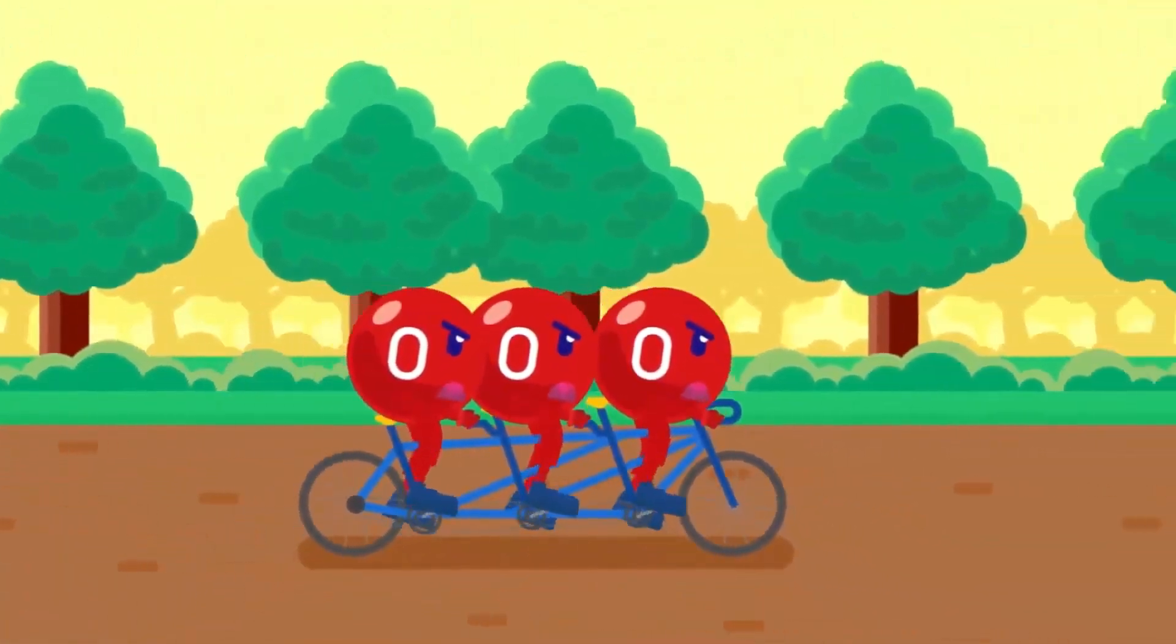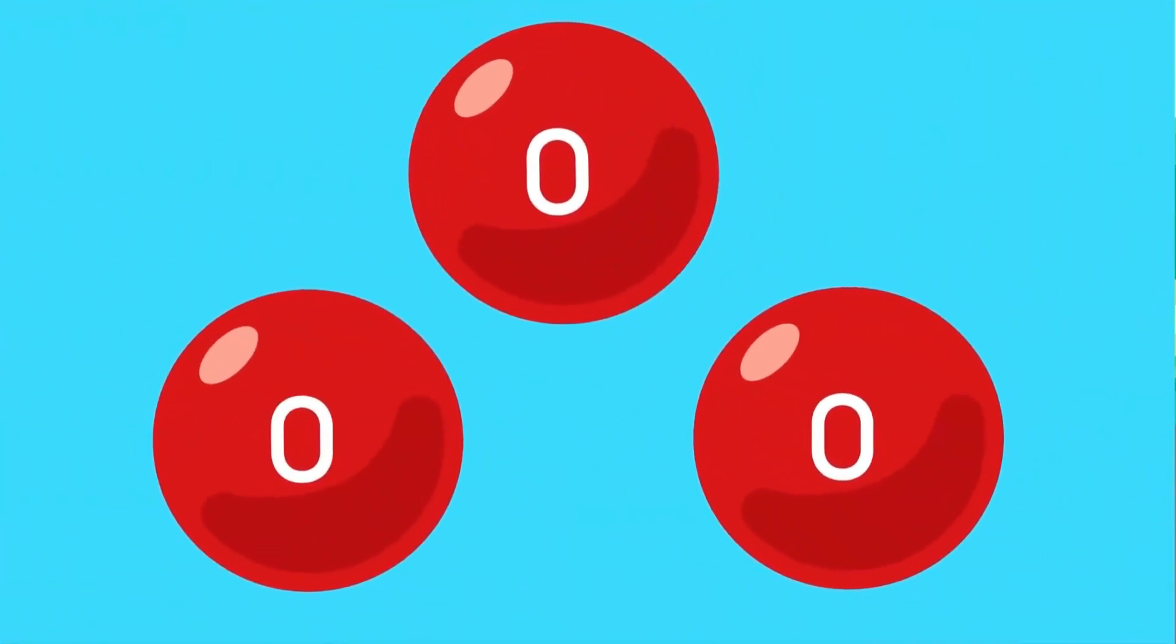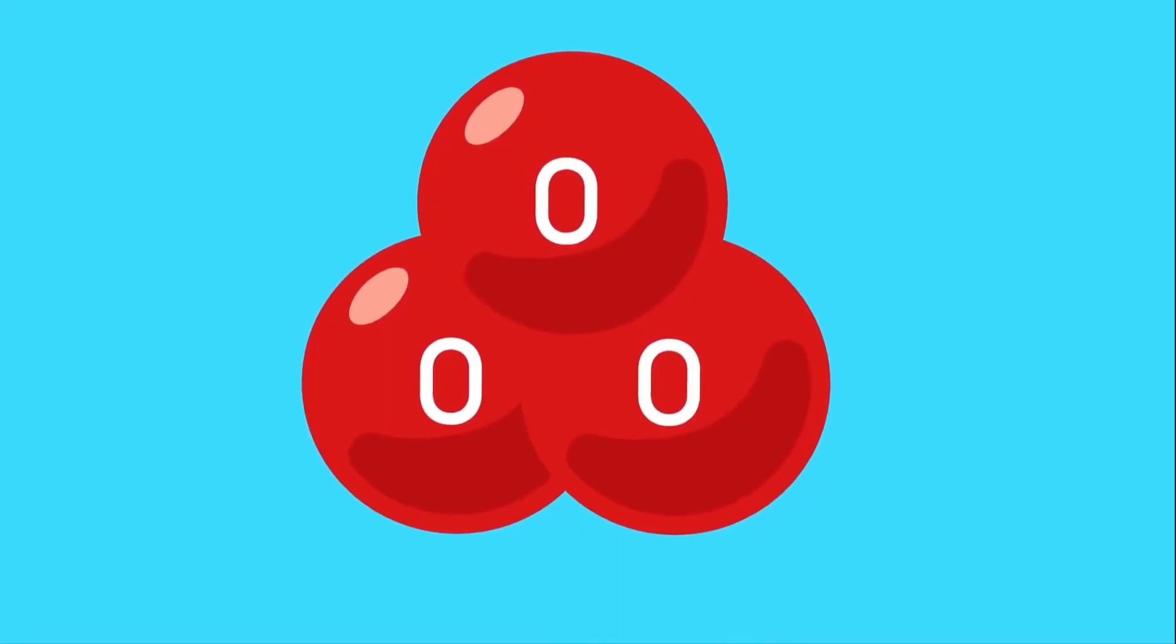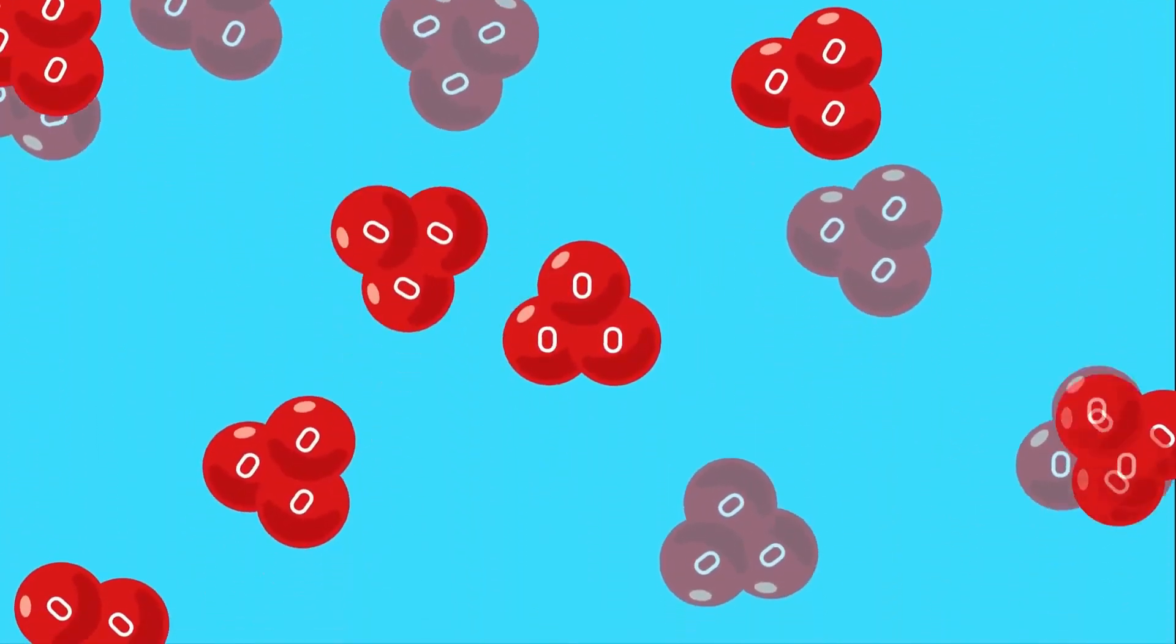Polyatomic meaning that the molecules are formed by the combination of three or more atoms. For example, an ozone molecule is formed by the combination of three oxygen atoms. This is how the ozone molecule is found in nature, and can be denoted as O3.